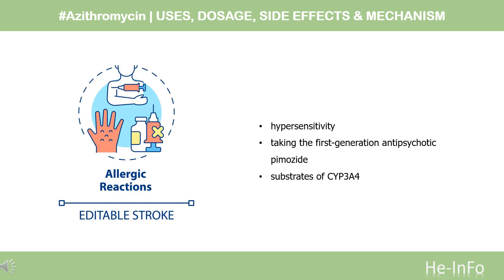Macrolide antimicrobials inhibit CYP3A4, the same cytochrome that metabolizes pimozide. Concomitant use of azithromycin with pimozide can cause dangerous plasma concentrations of pimozide, leading to QTc prolongation and potentially lethal arrhythmias. Additionally, azithromycin is an inhibitor of p-glycoprotein/ABCB1, a cell membrane glycoprotein transporter. Drugs that are substrates of p-glycoprotein, particularly those that are also substrates of CYP3A4, may represent a relative contraindication to azithromycin. Examples include colchicine and small-molecule CGRP antagonists.